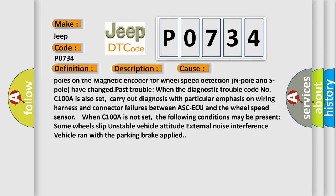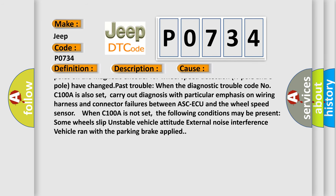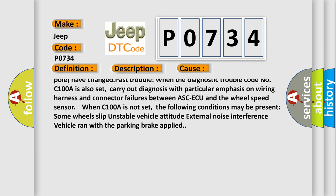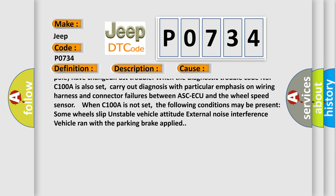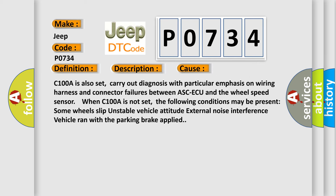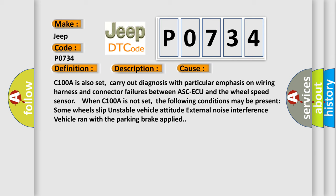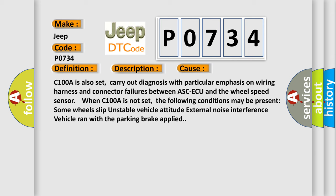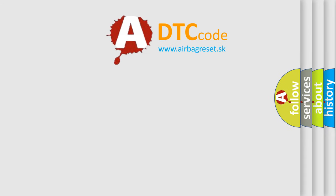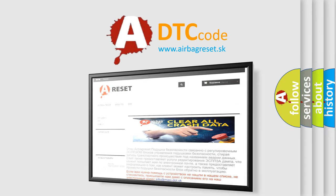C100A is also set, carry out diagnosis with particular emphasis on wiring harness and connector failures between ASC-ECU and the wheel speed sensor. When C100A is not set, the following conditions may be present: Some wheels slip, Unstable vehicle attitude, External noise interference, Vehicle ran with the parking brake applied. The Airbag Reset website aims to provide information in 52 languages. Thank you for your attention and stay tuned for the next video.